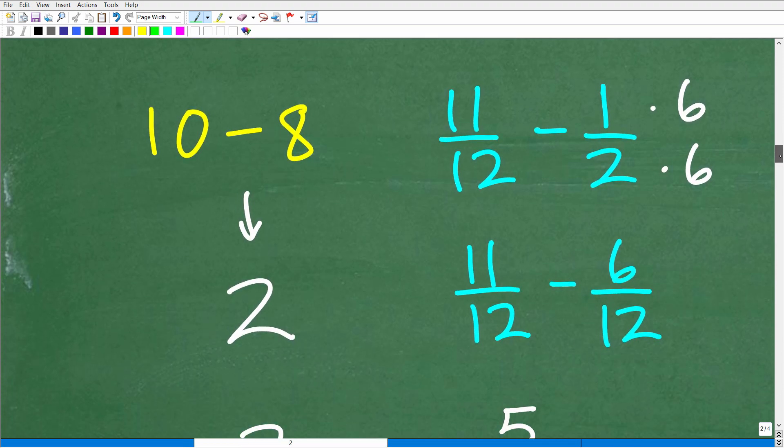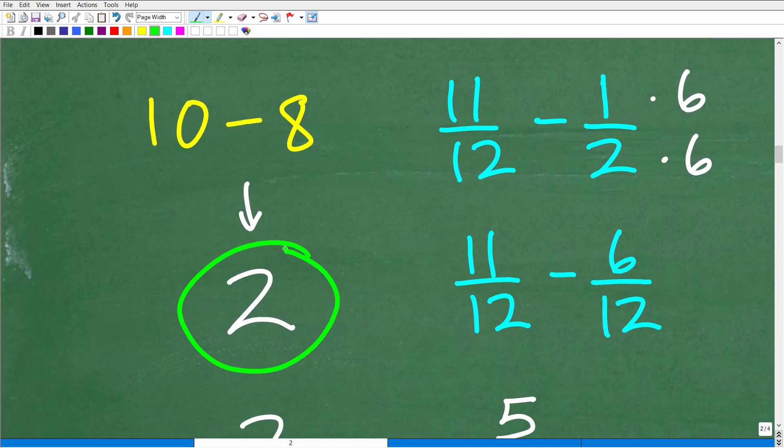All right so again 10 minus 8 will be 2. And 11 twelfths minus 1 half. Of course we don't have common denominators. The common denominator or the lowest common denominator is 12. So all we have to do is multiply this denominator by, I'm sorry, 6 to get a 12. So 6 times 2 is 12. And then when we multiply the denominator by 6 we've got to multiply the numerator by 6 as well. So now we have 11 twelfths minus 6 twelfths.